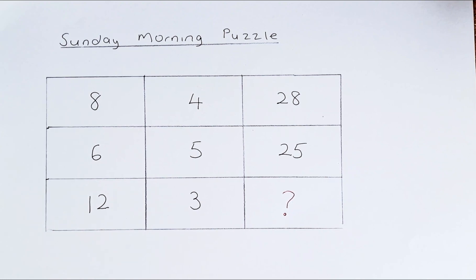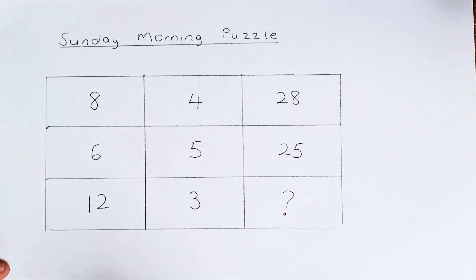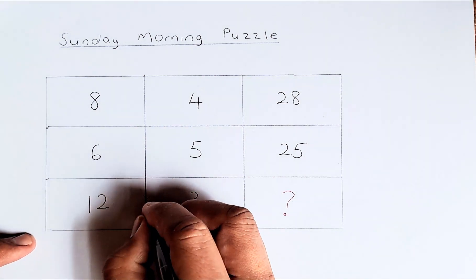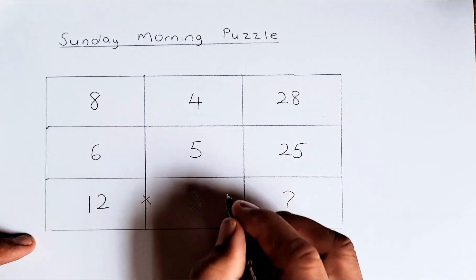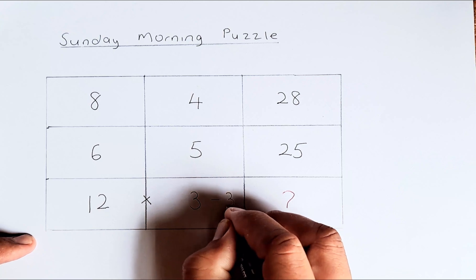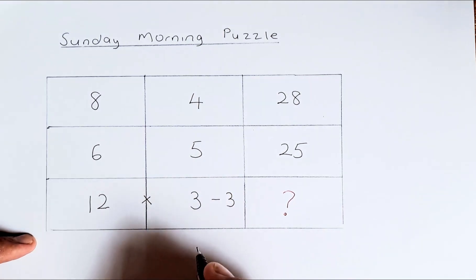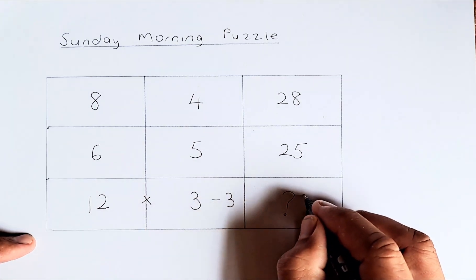So in our final row, we take 12 multiplied by 3, that gives us 36, and then we minus 3. So 12 times 3 is 36 minus 3, and our answer is 33.